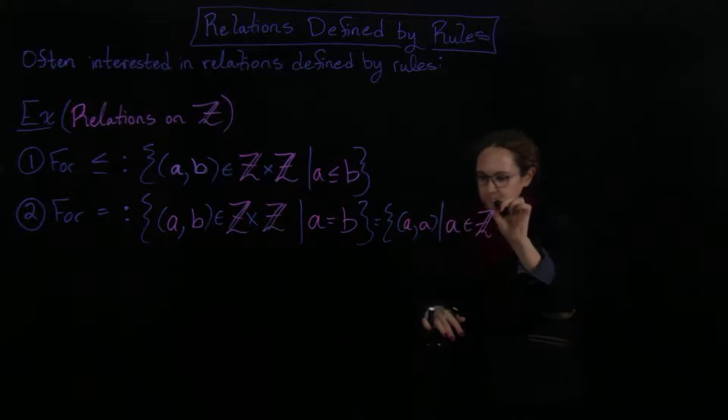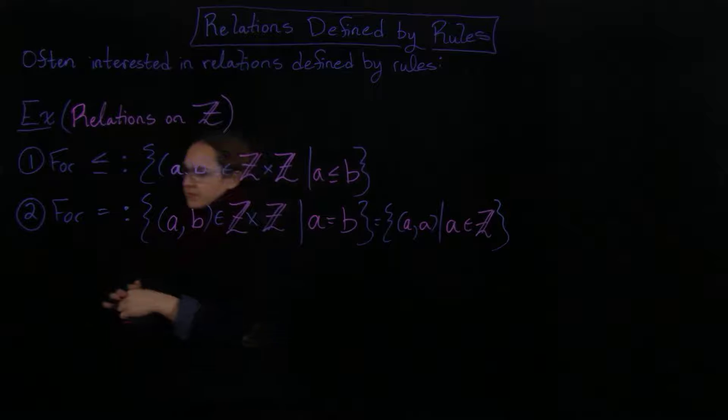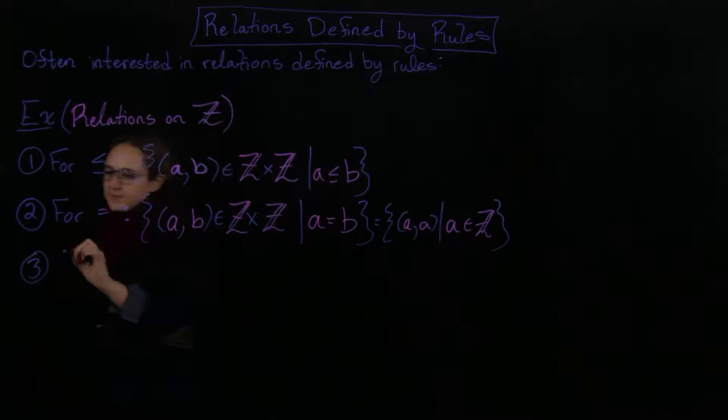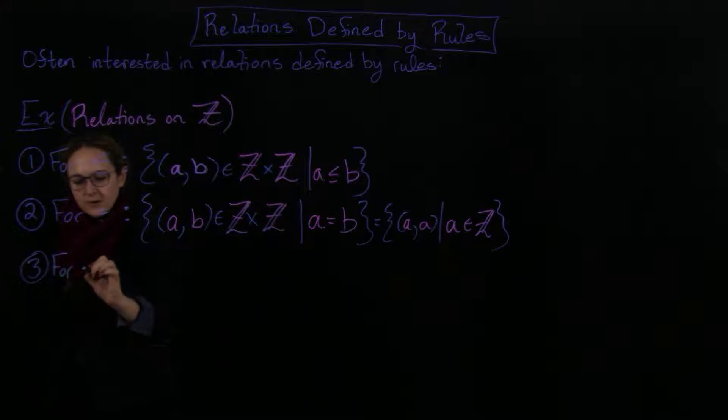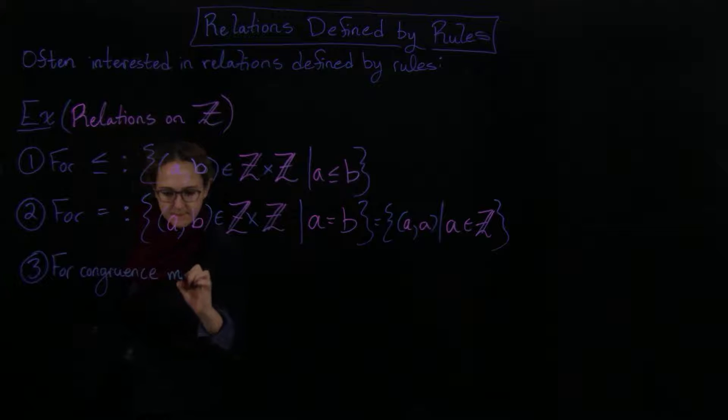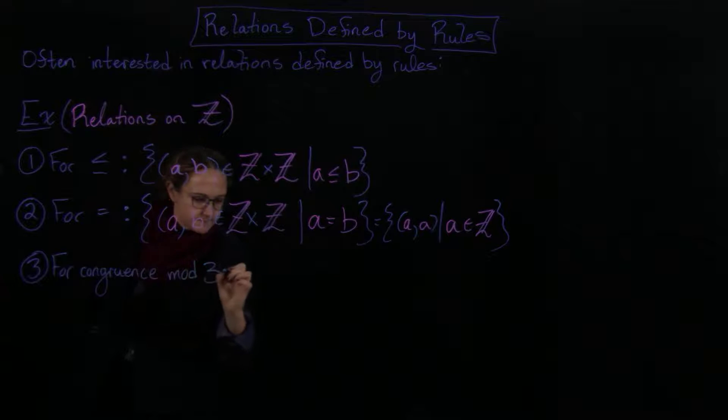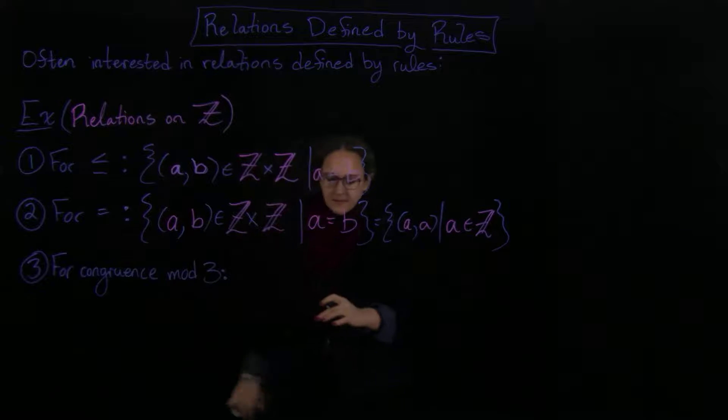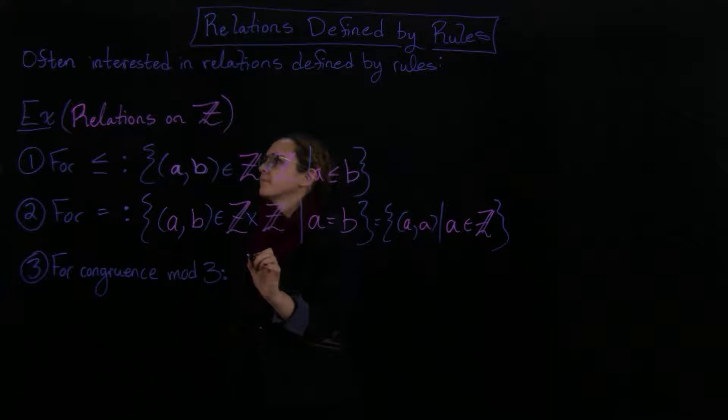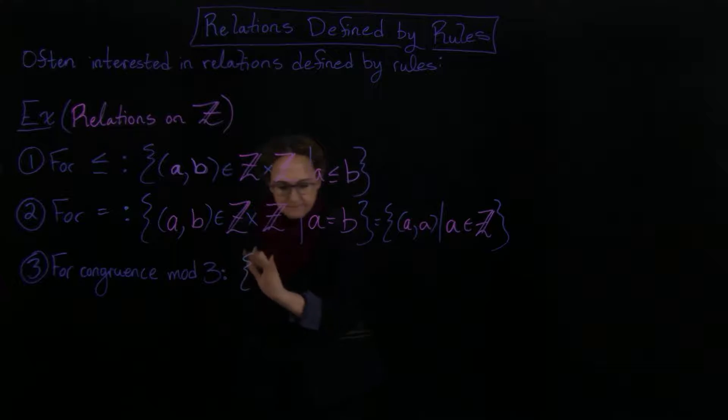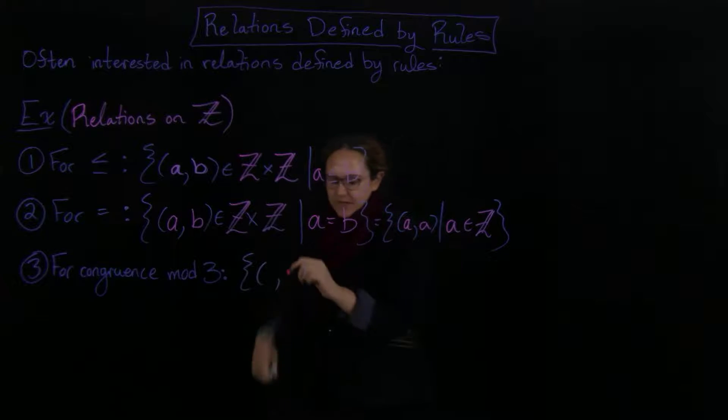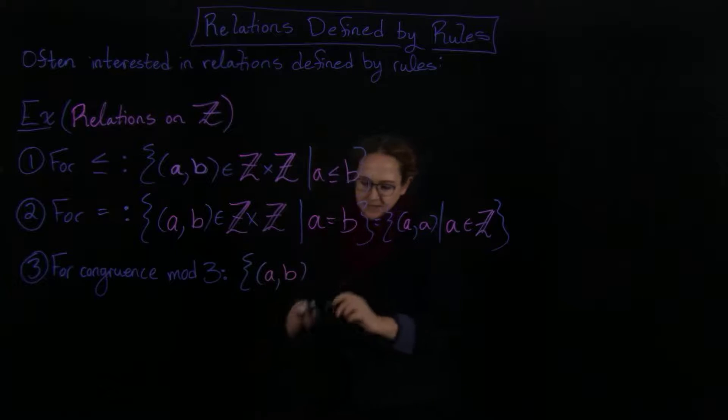Okay, and then for congruence, so if you want to talk about congruence mod 3, for example. Also for congruence mod 3, then R would equal the set of all, so now you would have the set of all A, B.